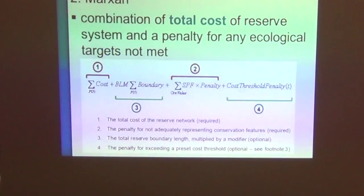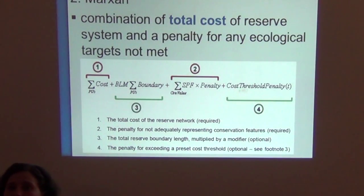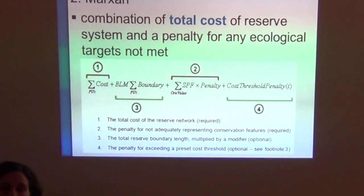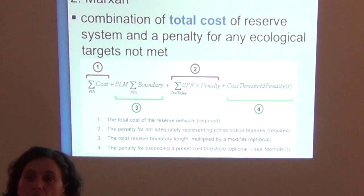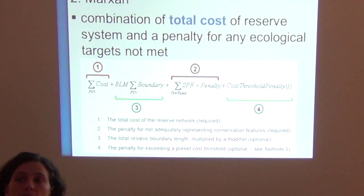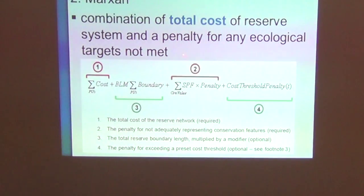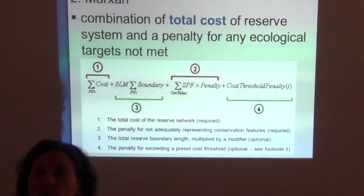The next algorithm, Markzan, is an interesting algorithm because it focuses on the total cost of the prioritization. We design a network of protected areas based on, in this particular algorithm, the total cost for that network of protected areas.